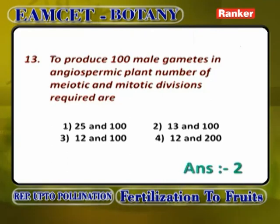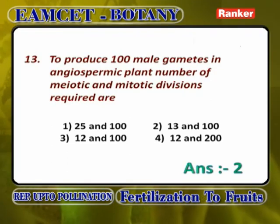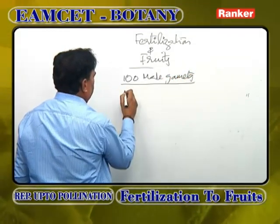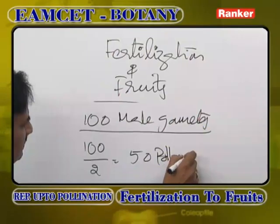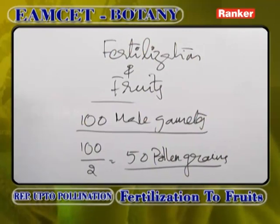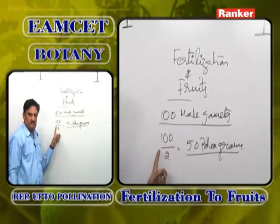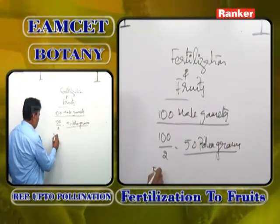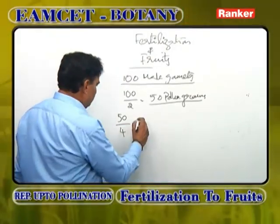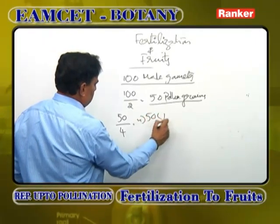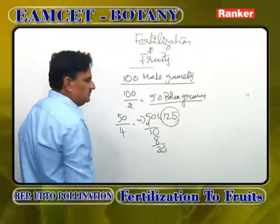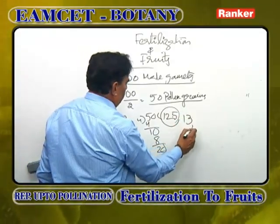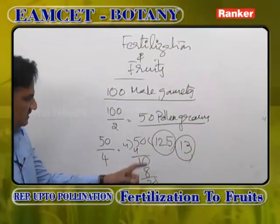To produce 100 male gametes in an angiospermic plant, number of meiotic and mitotic divisions required. 100 male gametes divided by 2 equals 50 pollen grains. To produce 50 pollen grains: 50 divided by 4 equals 12.5, so 13 meiotic divisions are required.